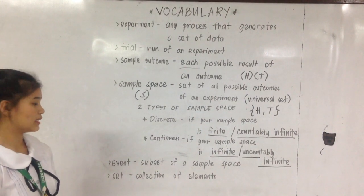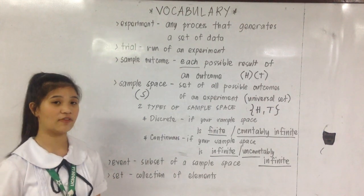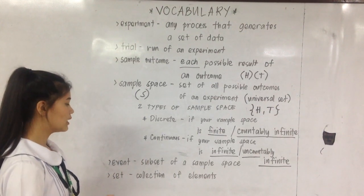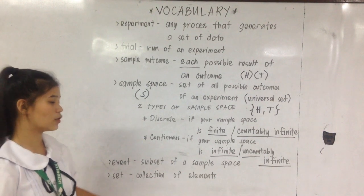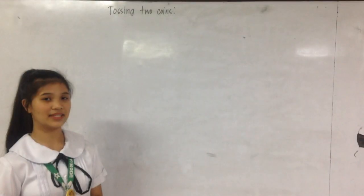Next word is event. Event is a subset of a sample space. Lastly, set. Set is a collection of elements. Let's have an example.